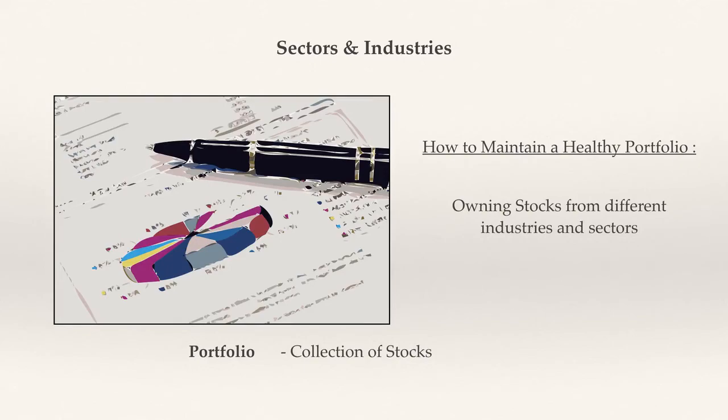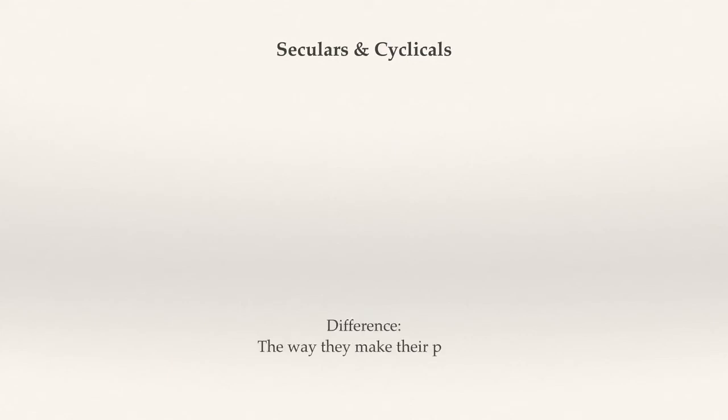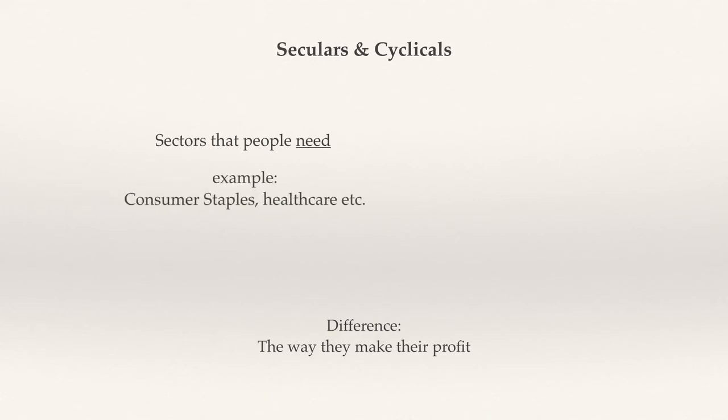Stocks are also divided into two very important categories: seculars and cyclicals. The big difference is in the way that they make their profits, therefore responding to the relative strength or weakness of the economy. Secular stocks make up stocks that people need regardless of the state of the economy — for example, consumer staples such as supermarkets, or healthcare. These are basically services that people will always use, even during a weak economy.